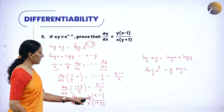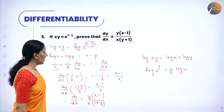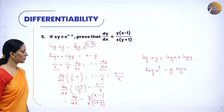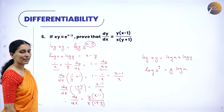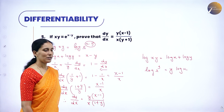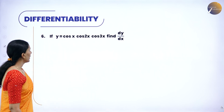Therefore dy by dx equals y(x minus 1) divided by x(1 plus y), which is the same as y(x minus 1) divided by x(y plus 1). Hence proved.